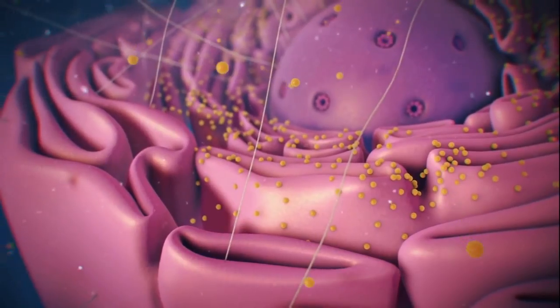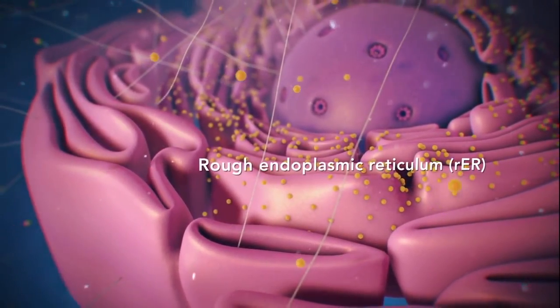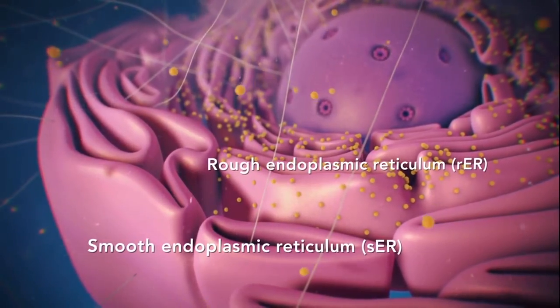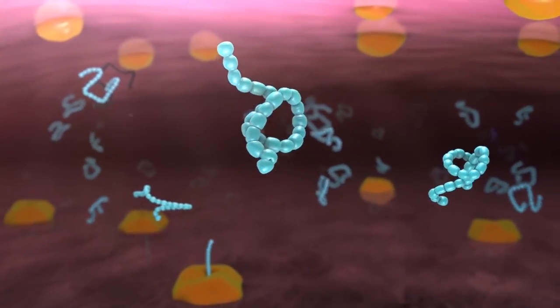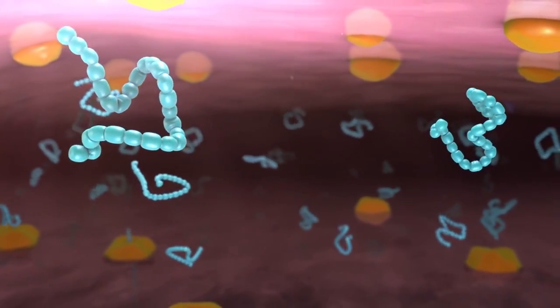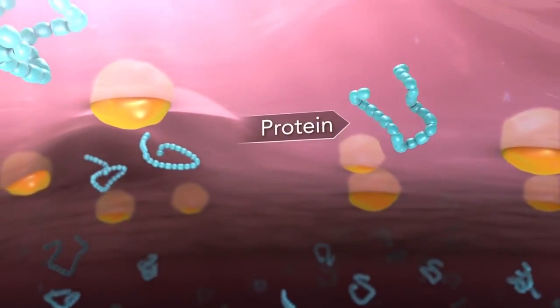There are two types of ER. Rough ER has ribosomes attached to it and smooth ER doesn't have ribosomes attached to it. The endoplasmic reticulum is a membrane-enclosed passageway for transporting materials, such as the proteins synthesized by ribosomes.